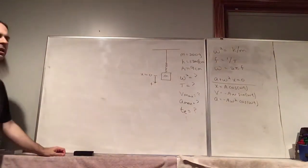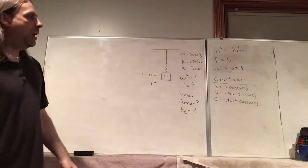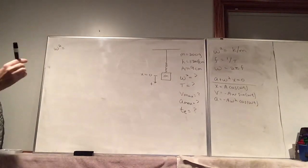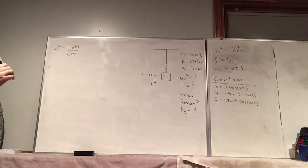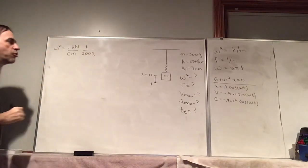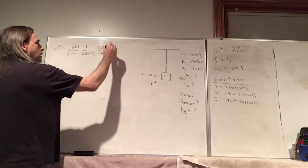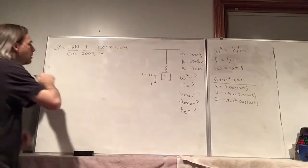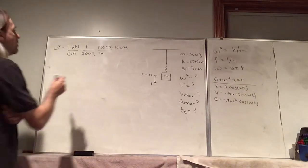Let's start with the angular frequency. For a mass on a spring, we have ω = √(k/m). Here k is 1.2 newtons per centimeter and the mass is 200 grams, so we are going to have to do some unit conversions. 100 centimeters is one meter, and 1000 grams is one kilogram. We have newtons per centimeter on top and grams on the bottom — that looks good.